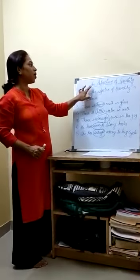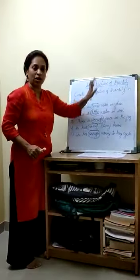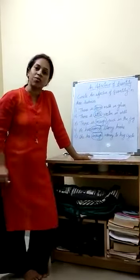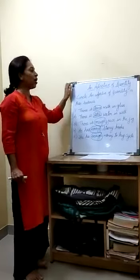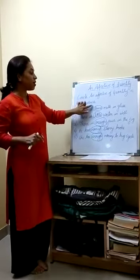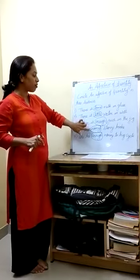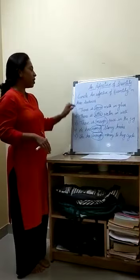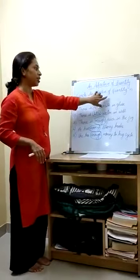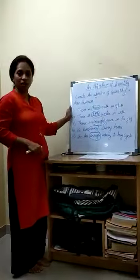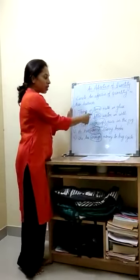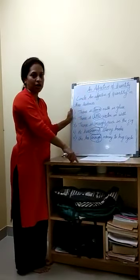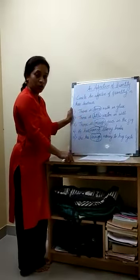So today what we learnt? We learnt about an adjective of quantity. Now your work is: you will write the definition which was given at the beginning, and then the examples — more, little, enough, many — all the examples you will write. Then we will write and circle the adjective of quantity in these sentences. This work has to be done in your English grammar part of your notebook.